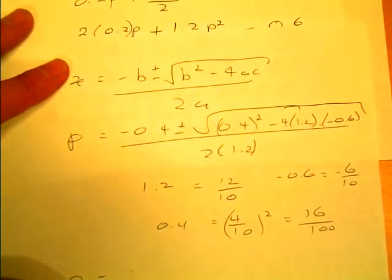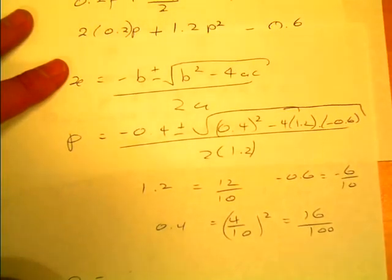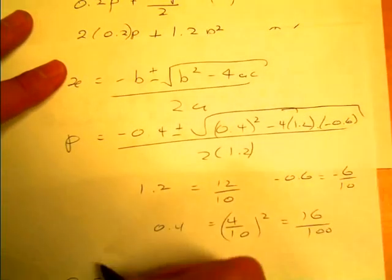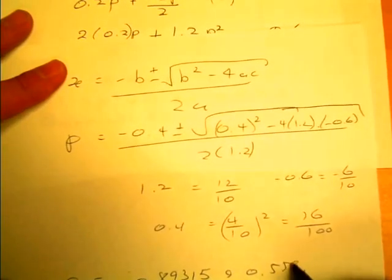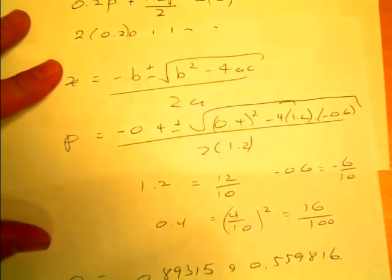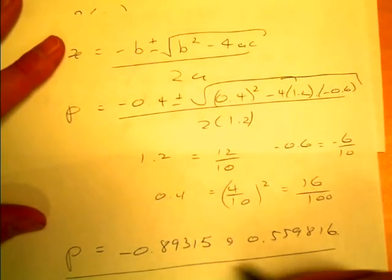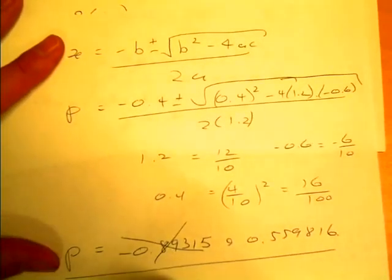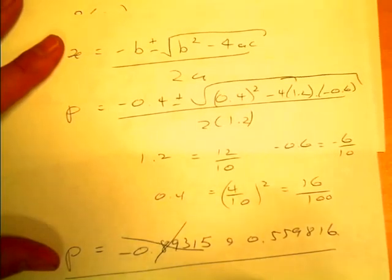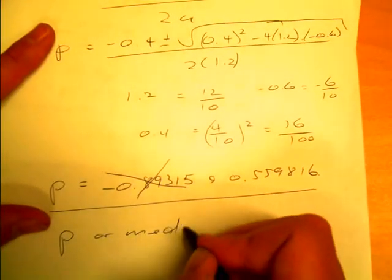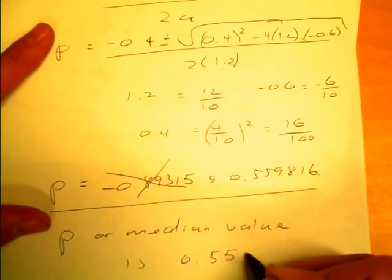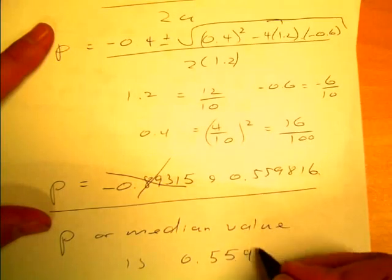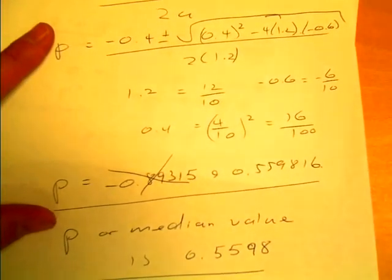And they are negative 0.89315 and 0.559816. Which one do I choose? Well, I choose the one that's in the interval I'm interested in, which isn't the negative one. So my median value, p or median, value is 0.559816, I'll leave it at.